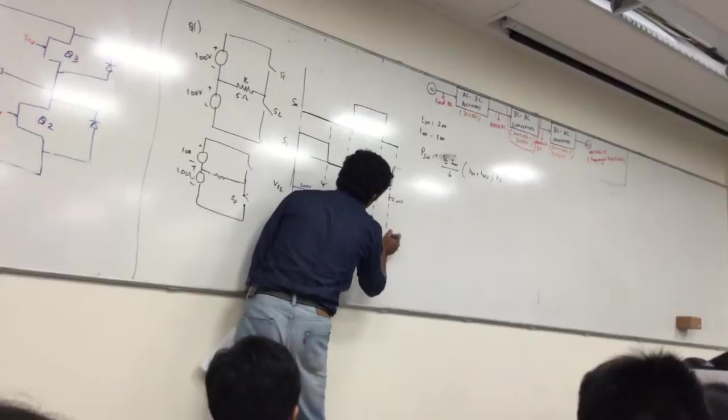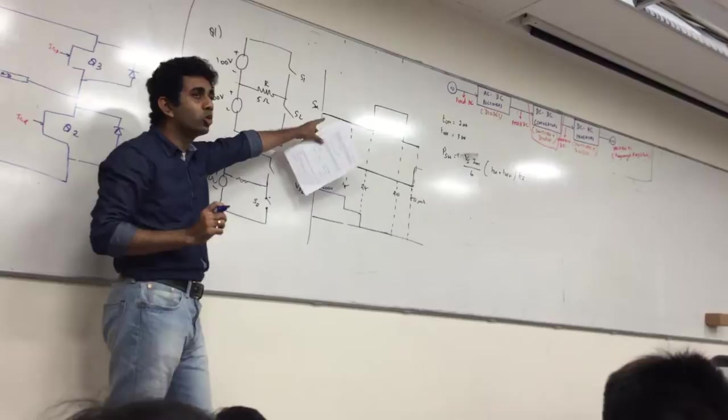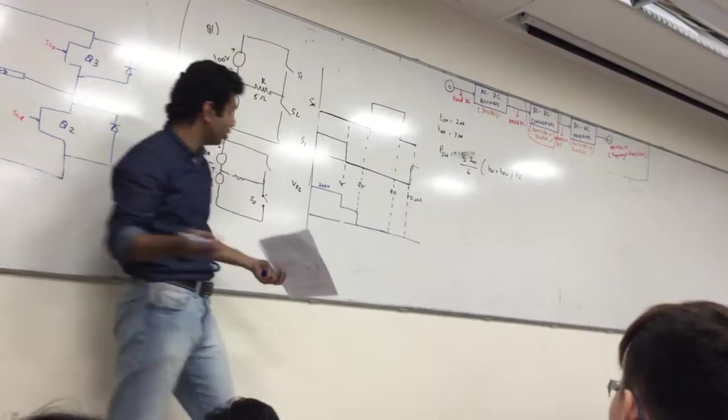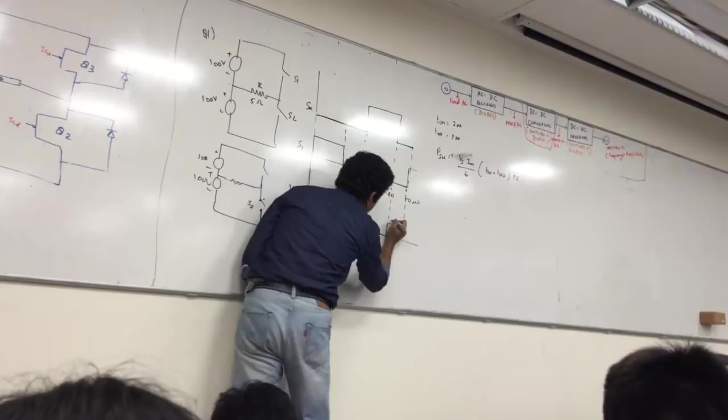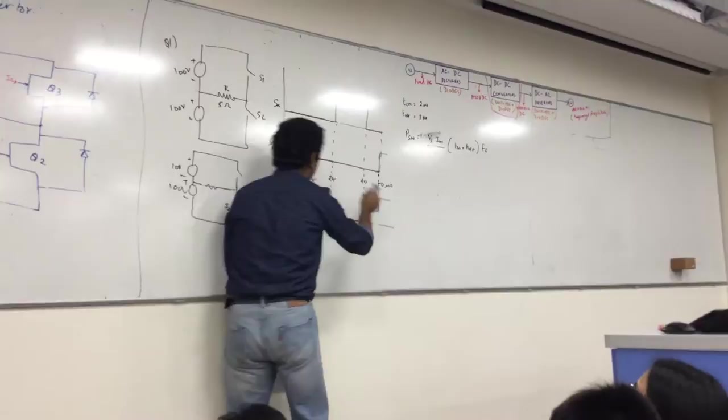What happens to your voltage once switch two becomes off? S1 is still off, so it comes back. So this is 200 volts, 100 volts, 100 volts, and then when switch one is again on in the next cycle, I'm going to have 200 volts.